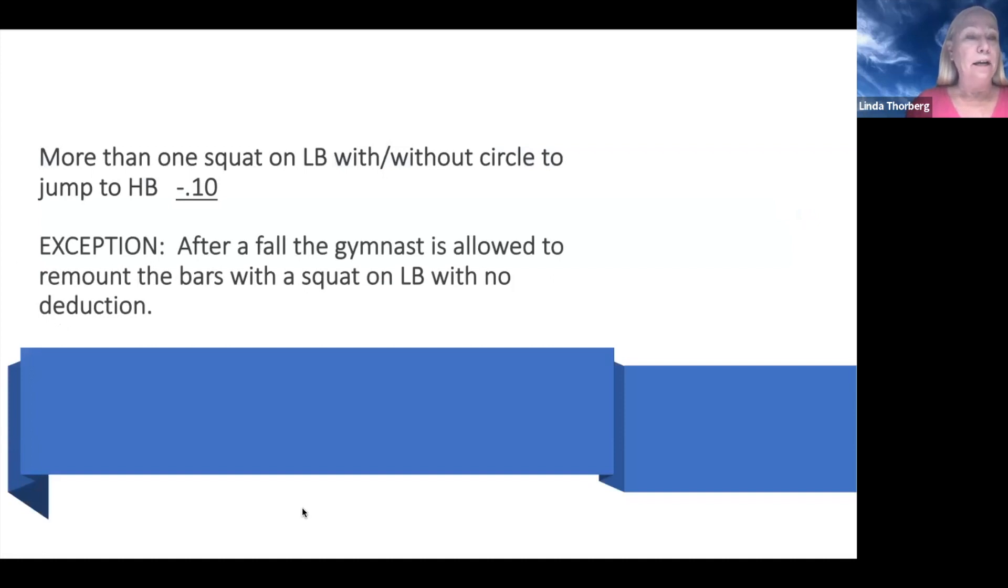So in the past, we had the deduction of one tenth for more than one squat on the low bar or toe circle around. If they did two, then they get the one tenth off. But now, if the gymnast falls, we are allowing her to do another squat on the low bar with no deduction after a fall. Remember, after a fall, our judging and optionals starts when they do an element. So if she does a crummy glide and doesn't extend or doesn't point her feet or knees are bent, we're taking off. If she does a kip and kips up to a front support and stops, and then does a cast squat on, now she has an extra swing. So we're not taking the one tenth for the squat on, but we have to still be aware of what the skills are she is doing and take off execution appropriately.